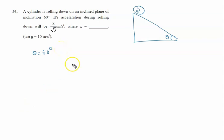This is a pure rolling situation. The acceleration for pure rolling is given by a equals g sine theta upon 1 plus k squared upon r squared. So gravity is 10, sine 60 is root 3 by 2.